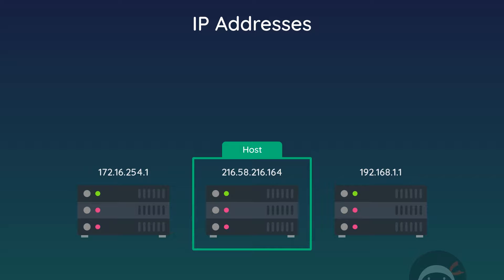If we want to connect to a server on a host computer we need to know its IP address. We could type that IP into the browser address bar to connect. But IP addresses are just a series of numbers and would be really hard to remember, so instead we use domain names to mask these IP addresses. When we type a domain name into a browser and hit enter, it finds the IP address associated with it and uses that to find the computer hosting the website.